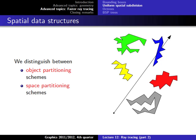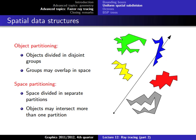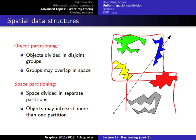This leads us to space partitioning approaches, which differ from object partitioning in that they partition space independently of where objects happen to be, rather than grouping space around objects. We'll cover space partitioning after a 15-minute break.